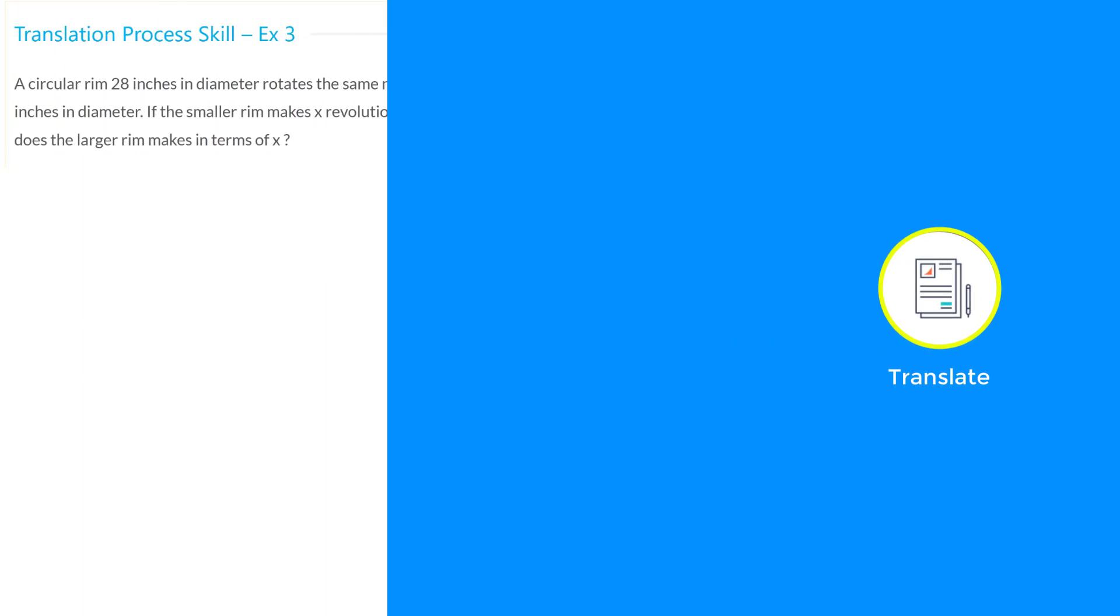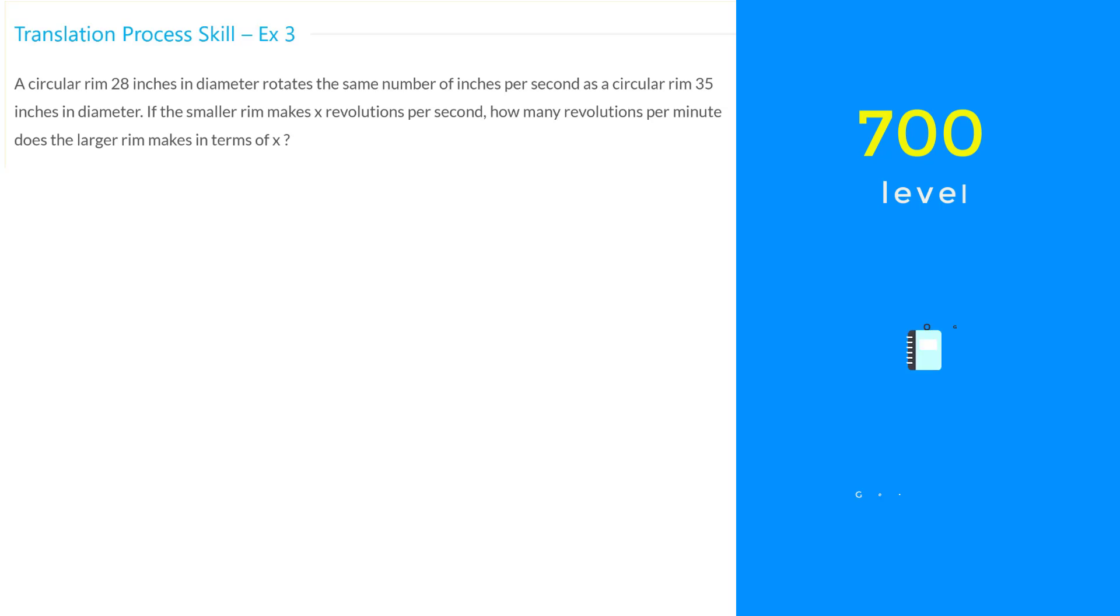Apply the translate process skill to solve this 700 level geometry question from the official guide advance book. Pause the video while you're solving and resume when you're done.